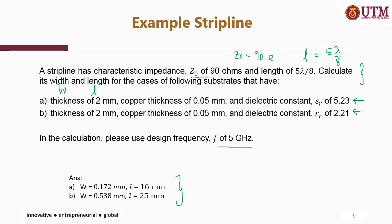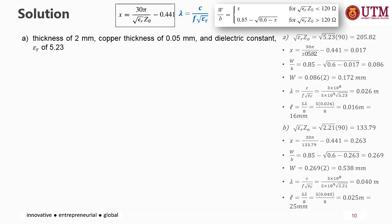Let's look at an example of a strip line. A strip line has characteristic impedance Z0 equal to 90 ohm and a length of 5λ/8. Calculate the width and the length for cases using different substrate properties at a frequency of 5 GHz. The answer is shown; however, you need to clearly show your steps — include the general equation, substitute the values, then state the final answer.